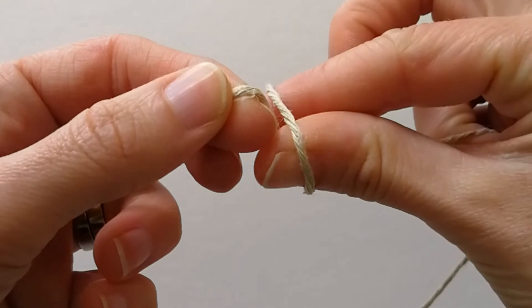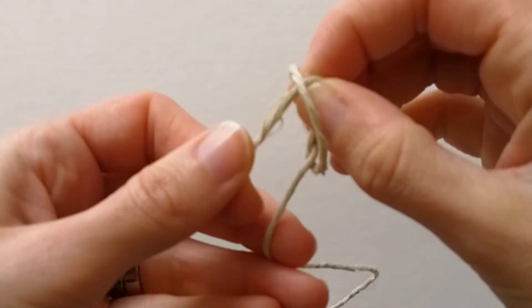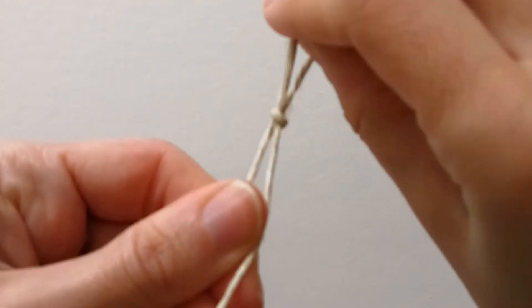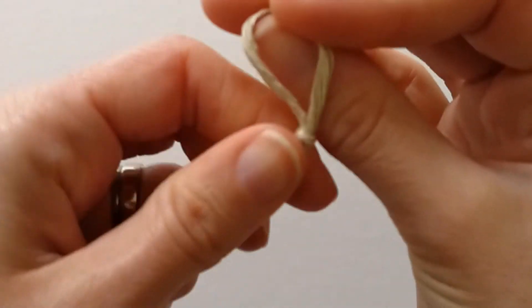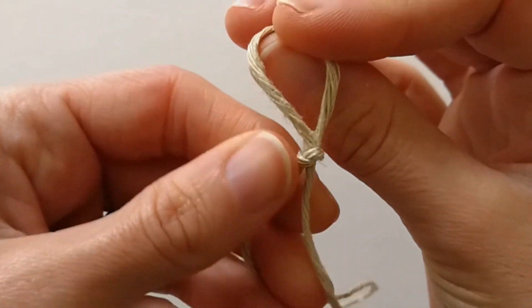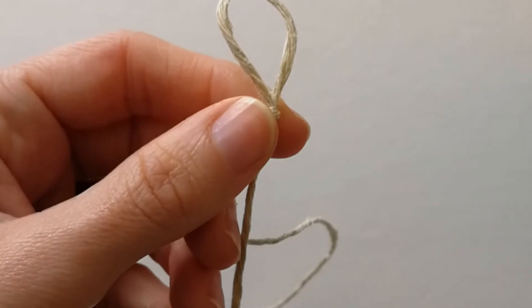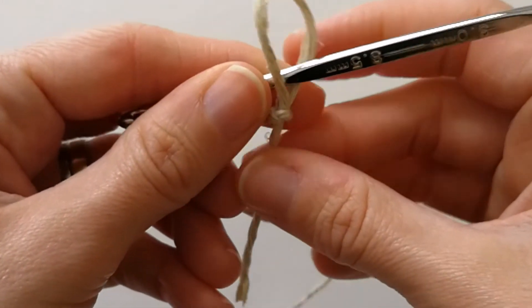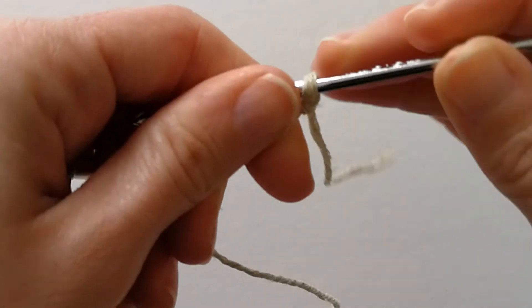Grab the end, hold on to both ends with your left hand and pull. Put your hook through the loop and pull the end to secure it.